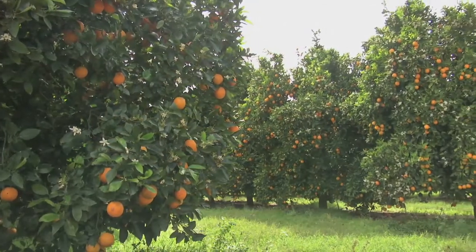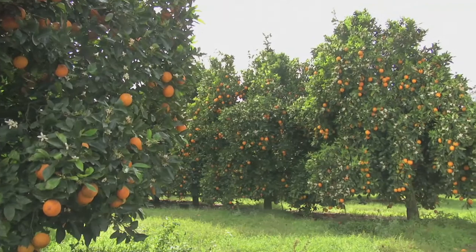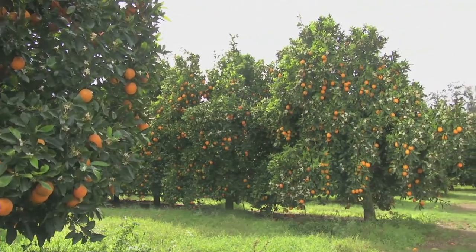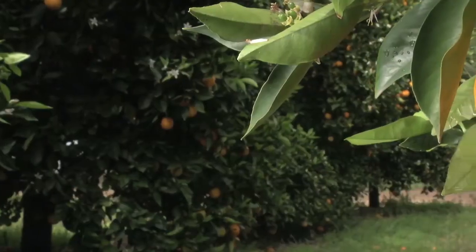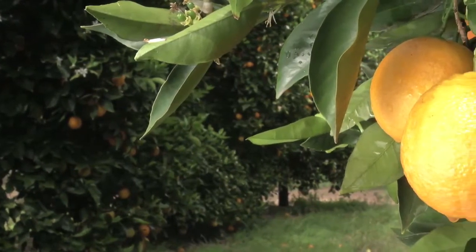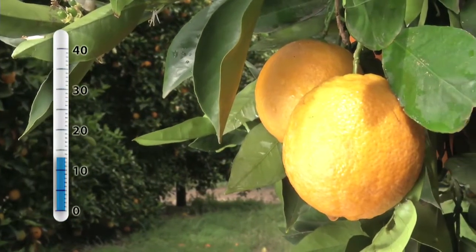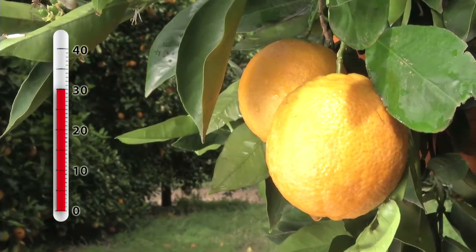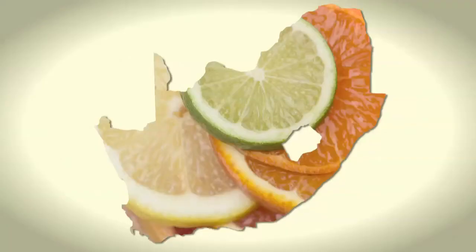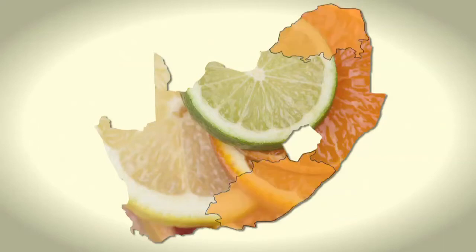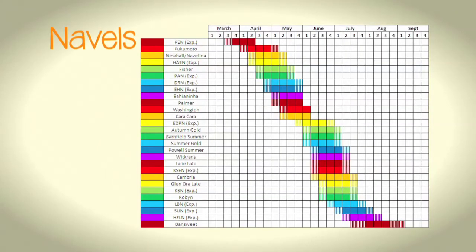Navels do well in cooler production areas where the night temperature drops considerably during the autumn. Rind colour development in citrus depends on night temperatures dropping below 13 degrees Celsius, while day temperatures are still relatively high. The major production regions for navels are the Eastern Cape, cooler areas of the Limpopo Province, and the Western Cape. The major commercial navel cultivars are Palmer, Bayaninia, Washington, and Cambria.